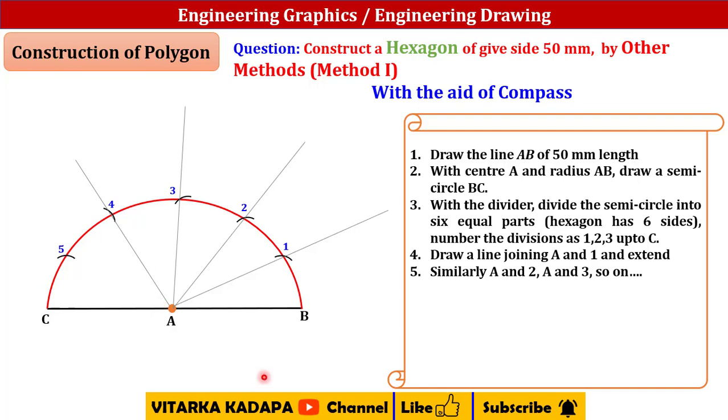Next, with the radius AB, whatever the radius is there from A to B, we need to take that radius on the compass, keeping B as a center. With this particular point as a center, we need to cut this A1 extension line at some point like this and term that point as D.